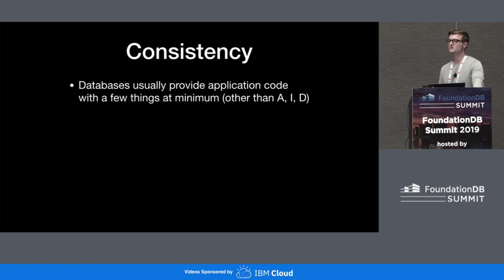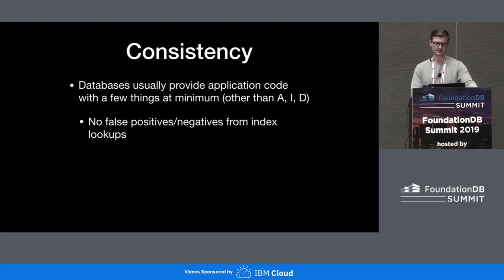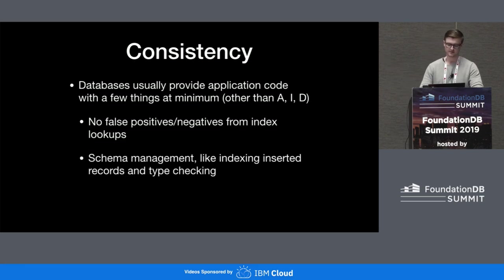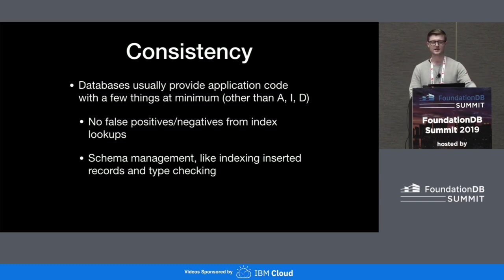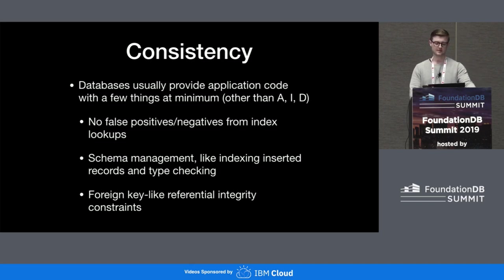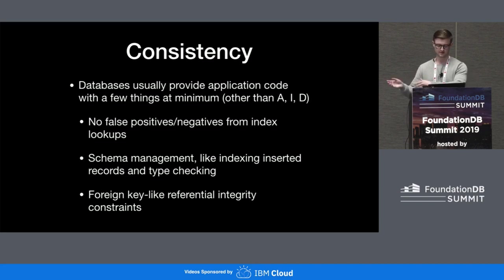Most databases provide you with a few things in the consistency realm, other than A, I, and D. The most important one, I would say, is no false positives or negatives from index lookups — you kind of need that if you have indexes. But again, if this is your layer, that's your job. Schema management — like inserting and indexing records, and some elements of type checking. Not all databases do that, but a lot do. And foreign key-like referential integrity constraints — not all databases support those either, but they're useful for ensuring there are no bugs in your program logic.